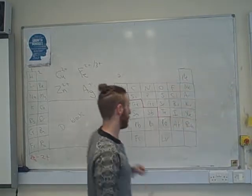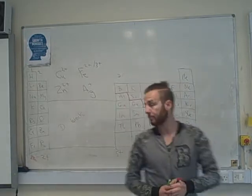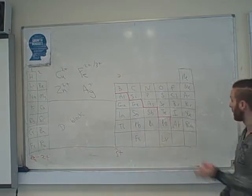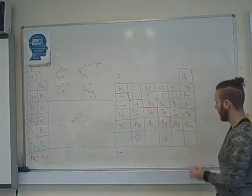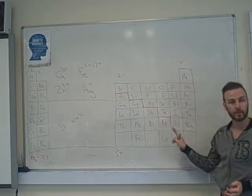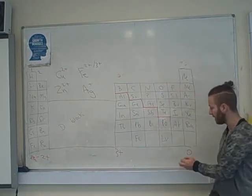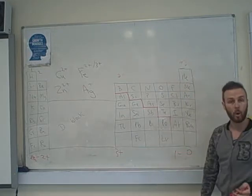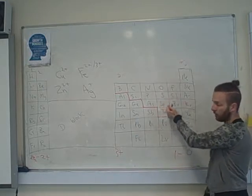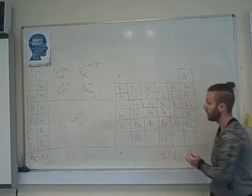Moving on to the non-metals on your right-hand side. These, on our far right, are called the noble gases. These do not have a charge. They have a charge of zero. Your halogens, fluorine, chlorine, bromine, iodine, astatine, these are one minus. You'll probably see how this is going. And then oxygen, sulfur, selenium, et cetera, two minus.